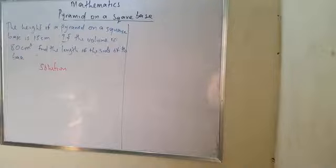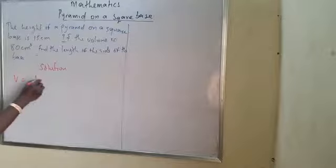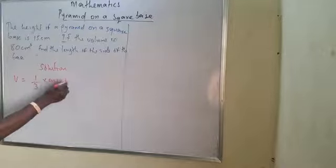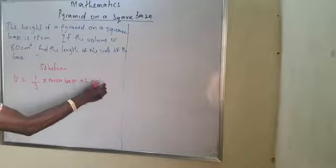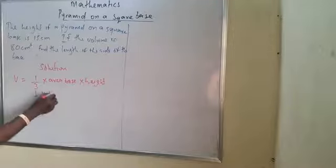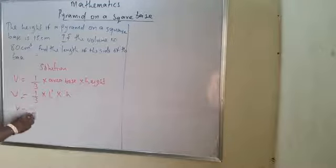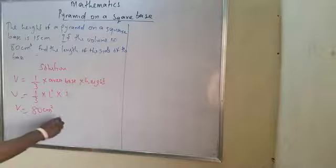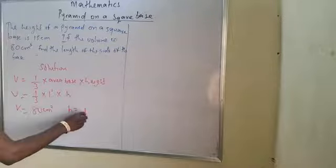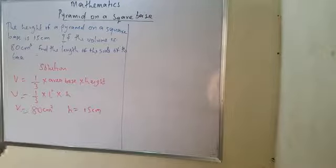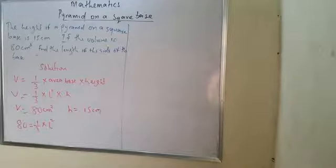Now, solution to this problem. We know that volume equals 1 over 3 of the area of the base multiplied by the height, which gives us 1/3 multiplied by L squared multiplied by H. The volume is given as 80 cm cubed, and the height H is given as 15 cm.